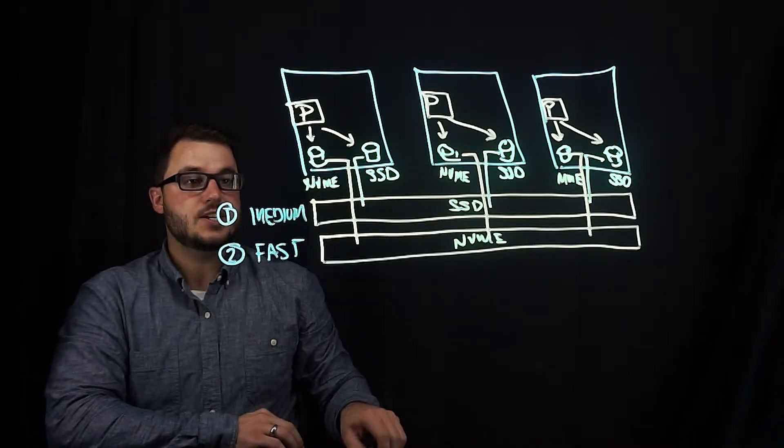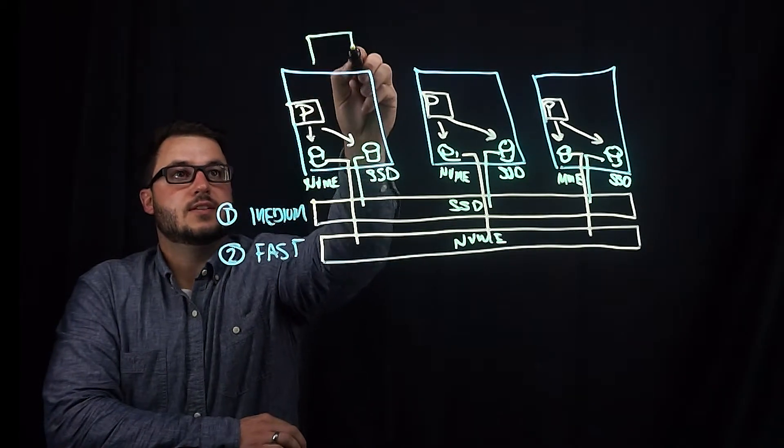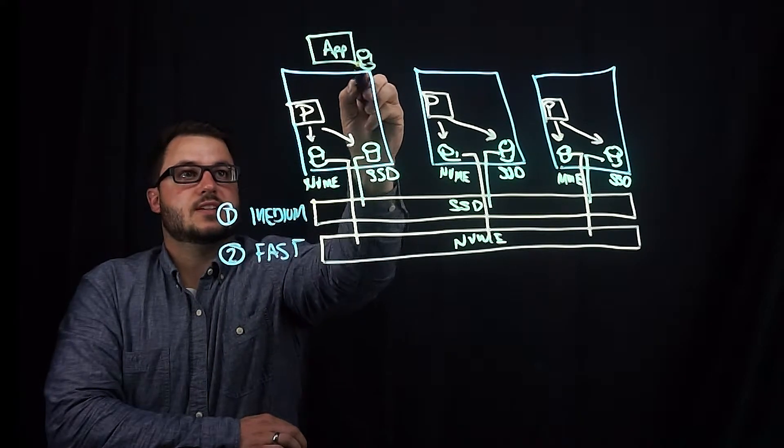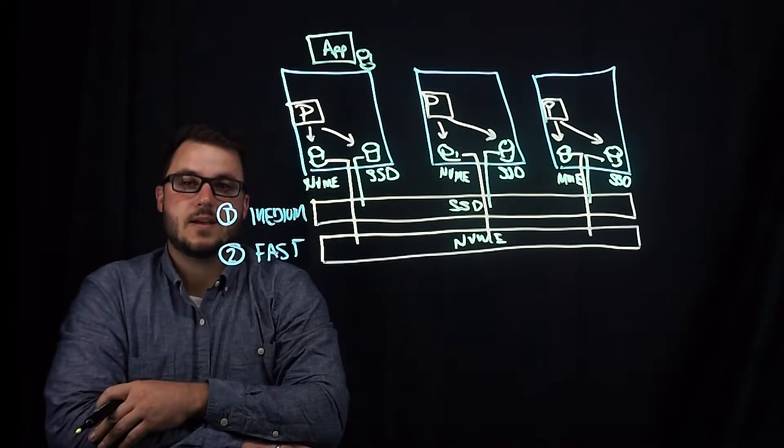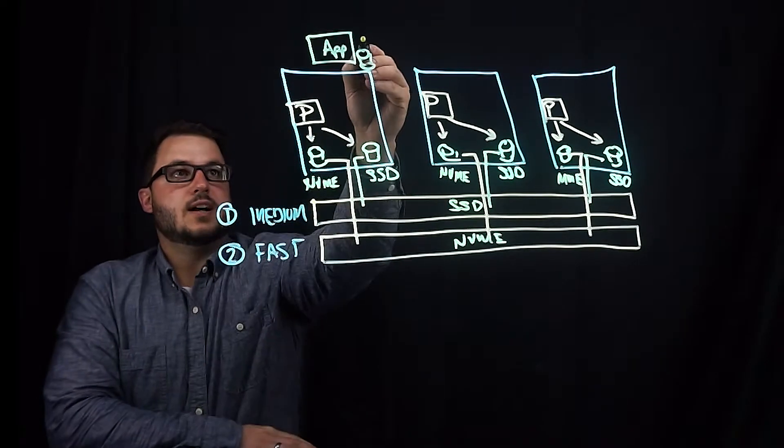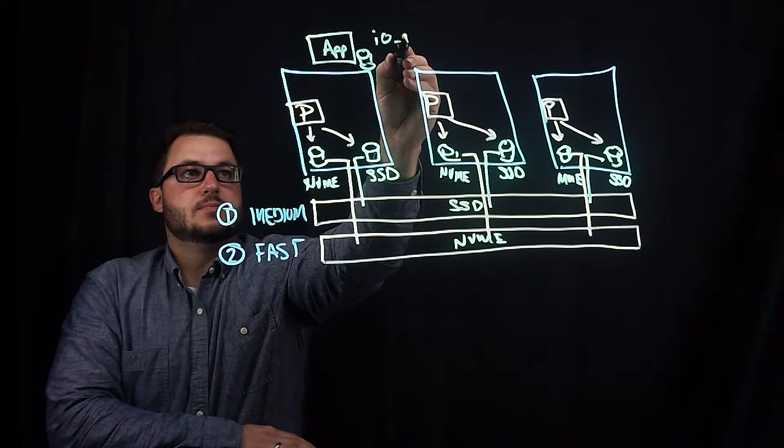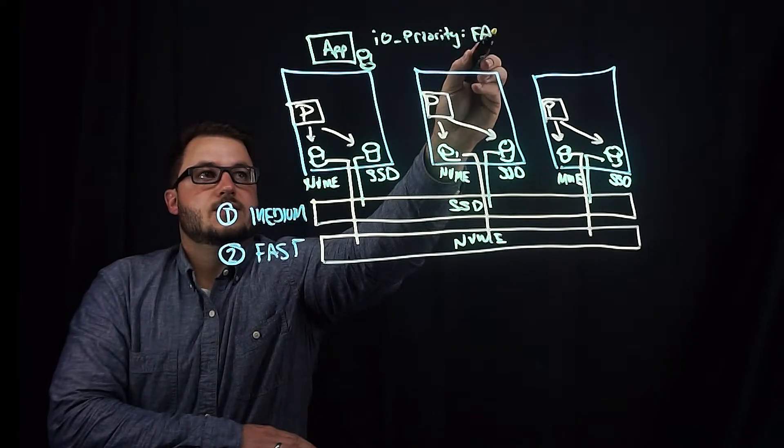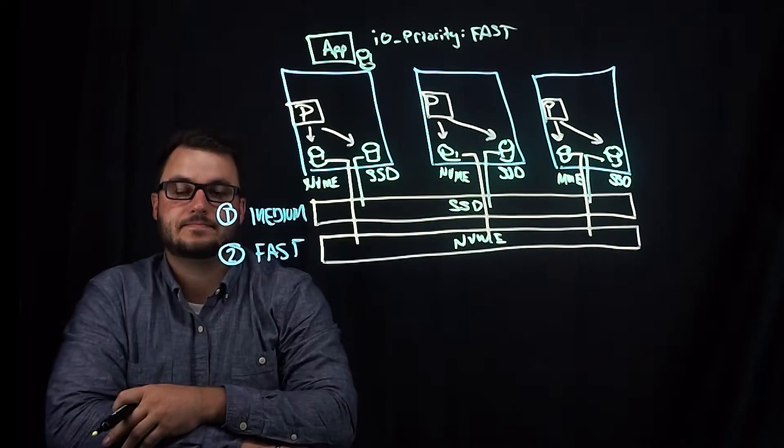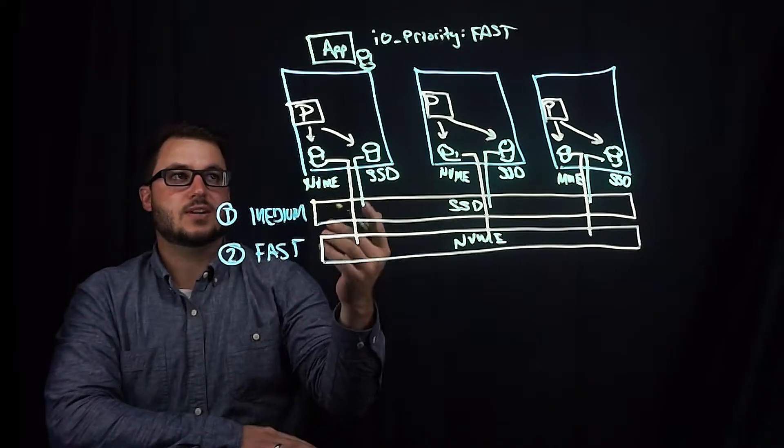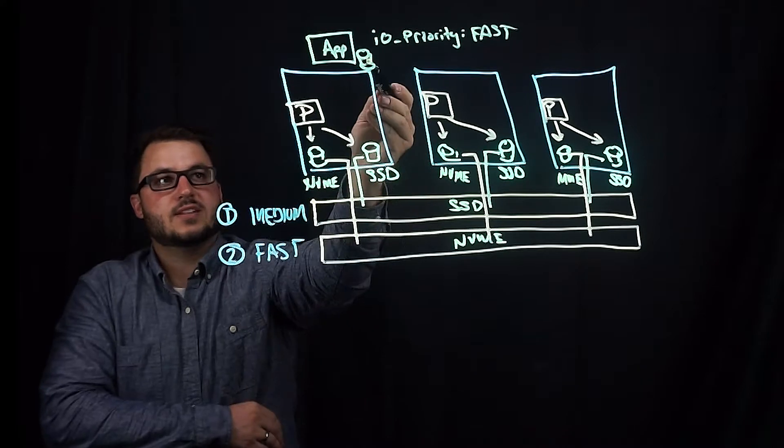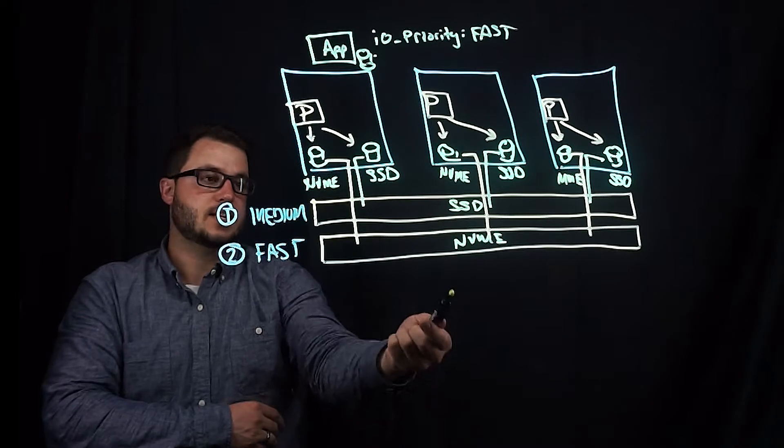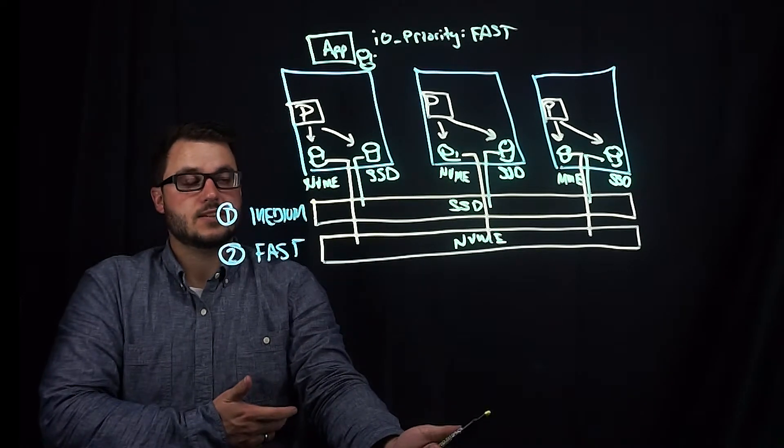Now when you're deploying your application, your application may have a disk. And in those parameters, you can associate the IO priority to fast. This will make sure that this virtual volume is provisioned from the fastest pool available, which in this case would be our NVME nodes.